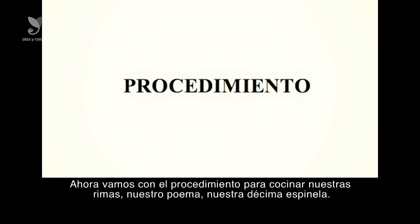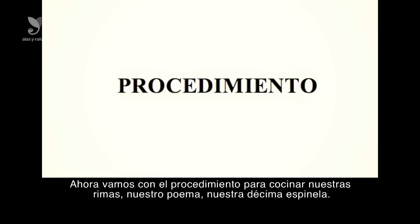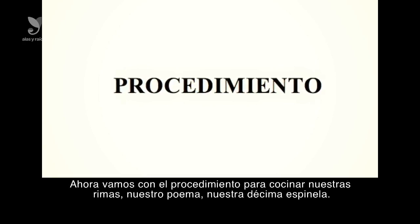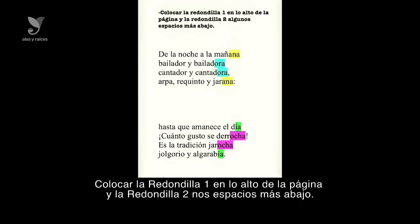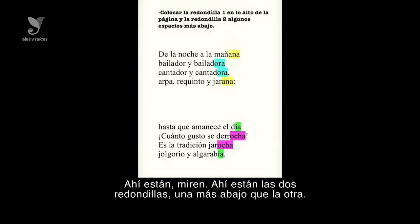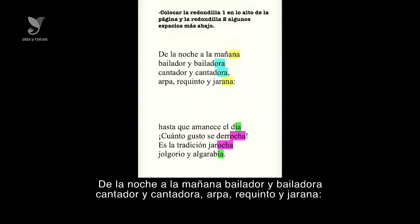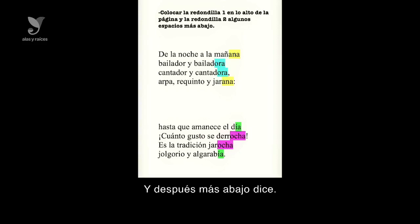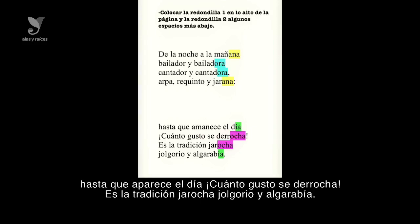Ahora vamos con el procedimiento para cocinar nuestro poema, nuestra décima Espinela. Colocar la redondilla uno en lo alto de la página y la redondilla dos algunos espacios más abajo. Ahí están las dos redondillas, una más abajo que la otra: 'De la noche a la mañana, bailador y bailadora, cantador y cantadora, arpa, requinto y jarana.' Y después más abajo: 'Hasta que amanece el día, cuánto gusto se derrocha, es la tradición jarocha, jolgorio y algarabía.'